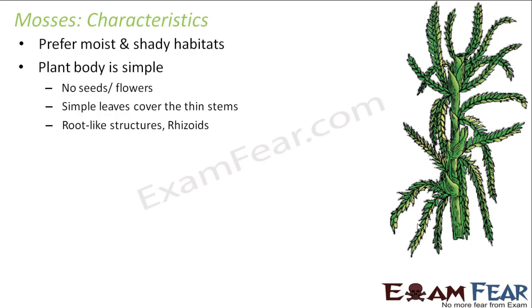Simple leaves cover the thin stems. Root-like structures called rhizoids are present. Rhizoids help in anchoring and also help in conduction of water and nutrients throughout the plant. Simple leaves are present along with thin stems. These leaves can perform the process of photosynthesis, and therefore they are autotrophic.